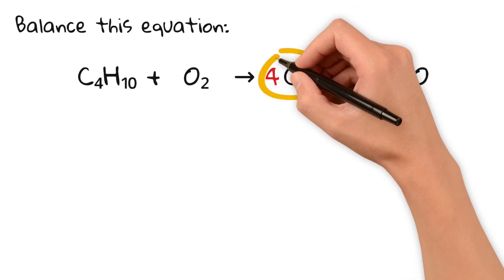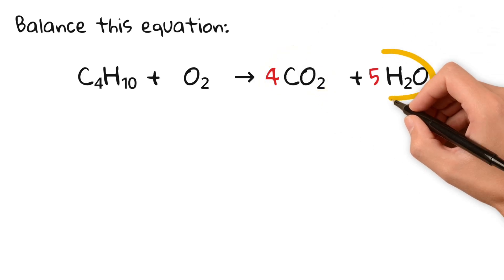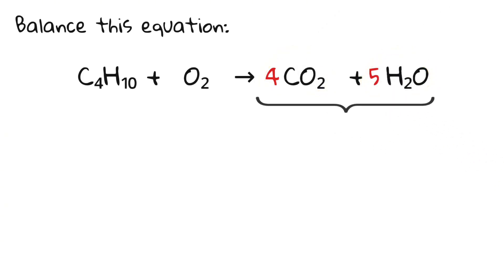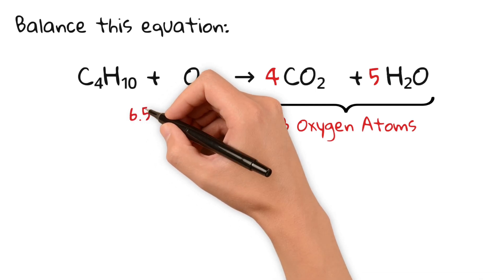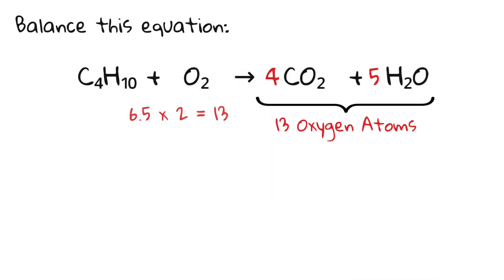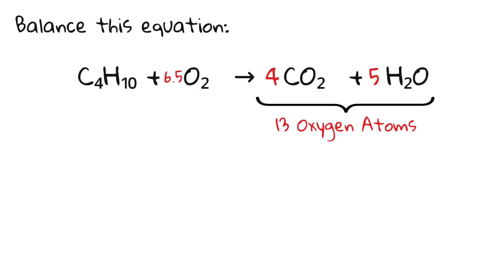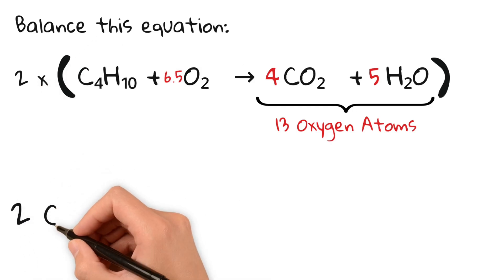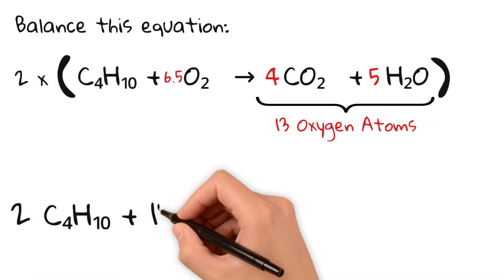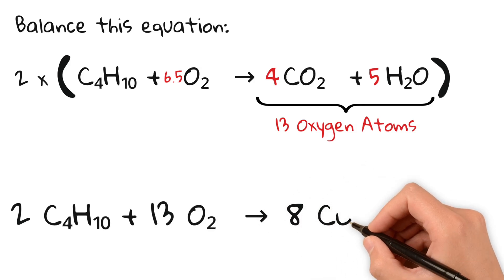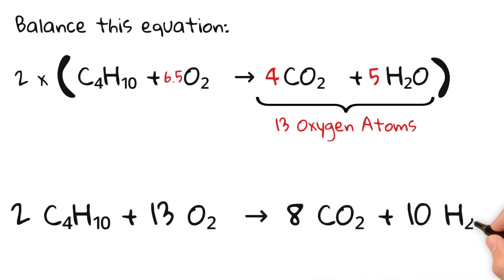Lastly we have to balance oxygen. We have four CO2 and five H2O. That makes a total of 13 oxygen atoms on the right hand side. In order to balance this we need 6.5 O2 molecules. Since we are not allowed to have fractions in our balanced equation we have to multiply the whole thing by two. So our final answer is 2 C4H10 plus 13 O2 reacts to 8 CO2 plus 10 H2O.